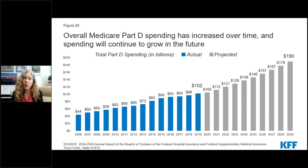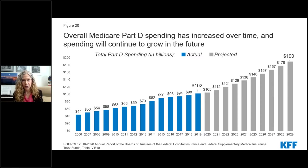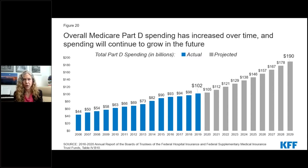Shifting now to look at overall Part D program spending, Part D spending was just over $100 billion in 2019, or about 12% of all Medicare benefit spending. Annual Part D spending depends on several factors, including the total number of Part D enrollees, which has been increasing over time, their health status and drug use, the number of high-cost enrollees with spending above the catastrophic coverage threshold, the number of enrollees receiving the low-income subsidy, and plans' ability to manage their enrollees' drug use — such as encouraging the use of generic drugs instead of brands and applying utilization management tools like prior authorization.